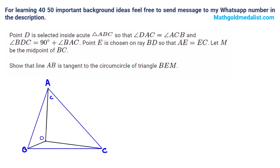This angle BDC is 90 plus A. Then it says point E is chosen on ray BD so that AE is equal to EC.